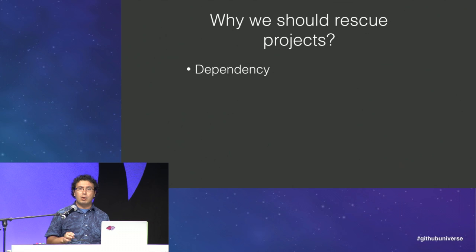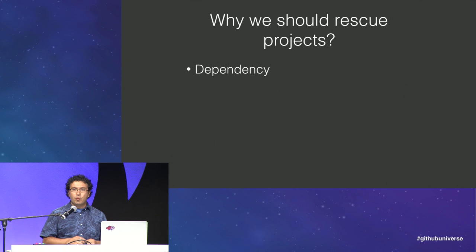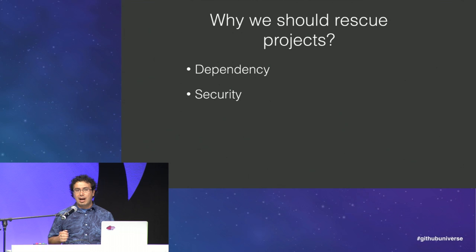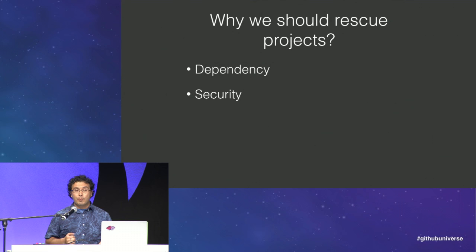I think there are three main reasons. The first is dependency — these days software is built on top of millions of open source libraries, and we depend on all those libraries to do our jobs and innovate. The second reason is security — every day new bugs and security issues are discovered, and it's in our best interest to figure out how to solve those issues for all our dependencies. Security and trust are important values of open source.